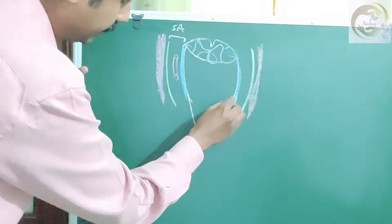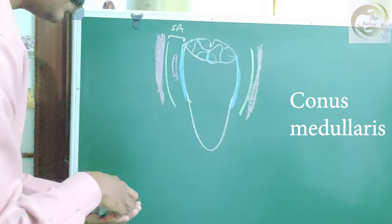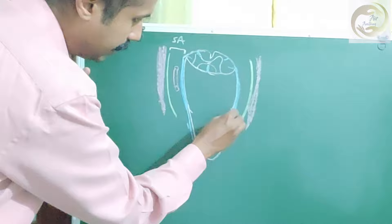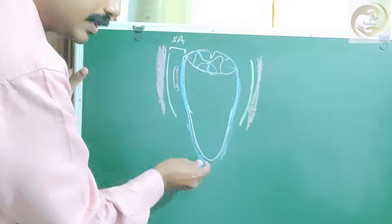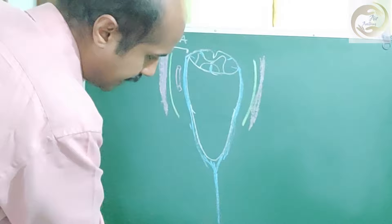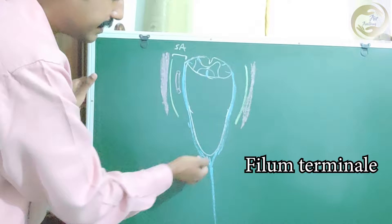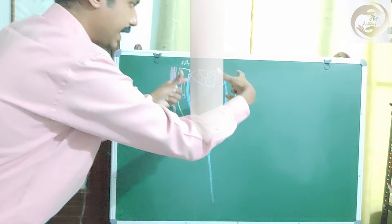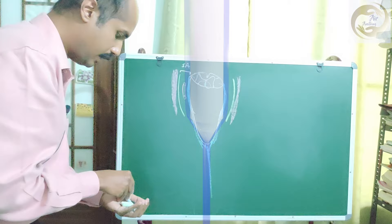Another important modification of the pia is at the lower end. In the lower part, the spinal cord forms a conical projection called the conus medullaris. The pia sleeve that invested the spinal cord will continue below the lower part of the spinal cord. The lower part of the spinal cord is at approximately the level of L1 vertebra, but beyond that, the pia extension continues downwards and is called the filum terminale. The filum terminale is not nervous tissue — it is just a pia extension.